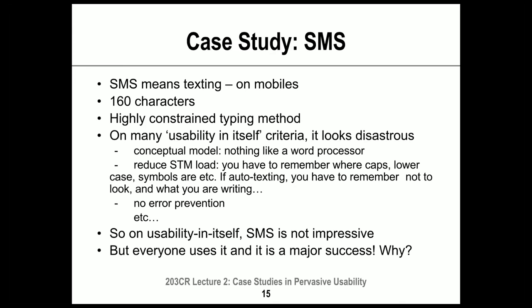Coming back to SMS: you're constrained to a number of characters and have a highly constrained typing method, often requiring abbreviations. In usability in itself testing, you'd compare typing an SMS to typing the same message in a word processor, and SMS is way slower and more difficult. Additionally, SMS creates significant memory load — one key can stand for many different characters, and with auto-texting you've got to remember not to look at what you're typing. There's no error prevention necessarily. In lab tests, SMS looks like a disaster.